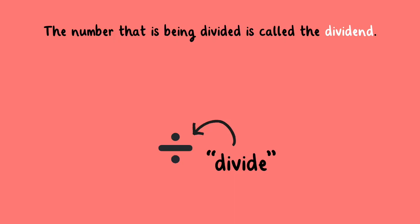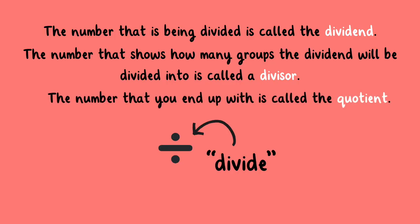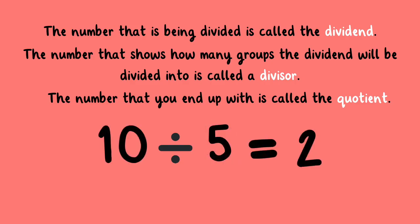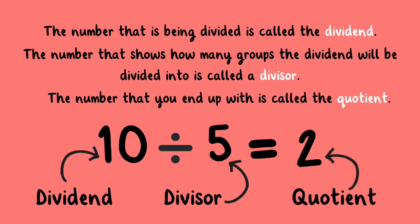When dividing numbers, the number that is being divided is called the dividend. The number that shows how many groups the dividend will be divided into is called the divisor. And finally, the number that you end up with is called the quotient. For example, 10 divided by 5 equals 2. 10 is the dividend, 5 is the divisor, and 2 is the quotient.